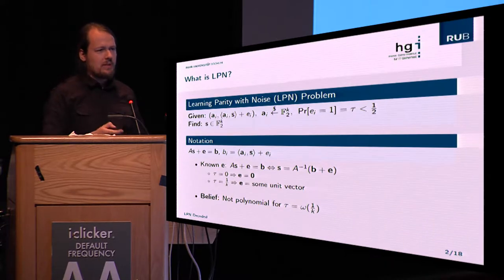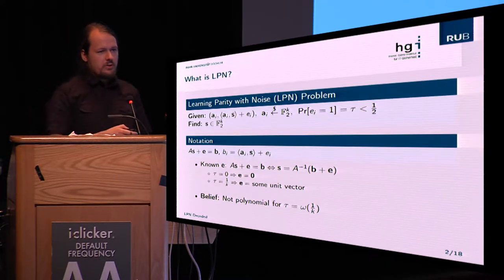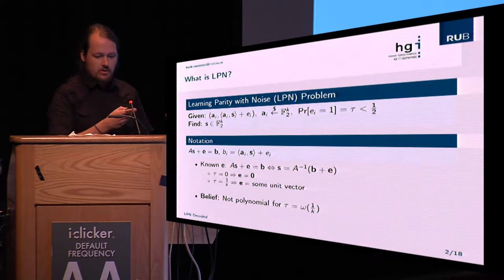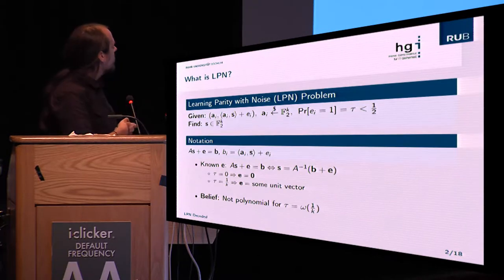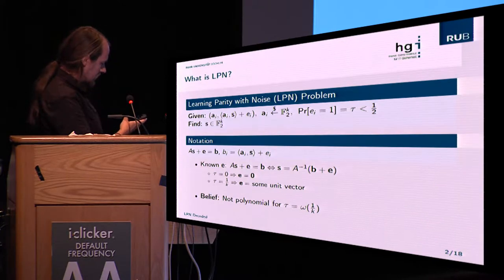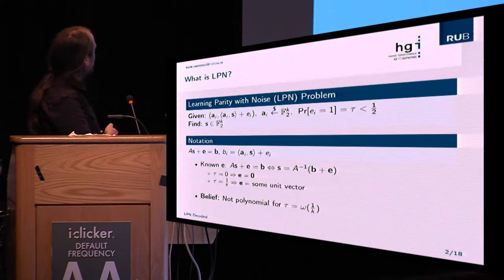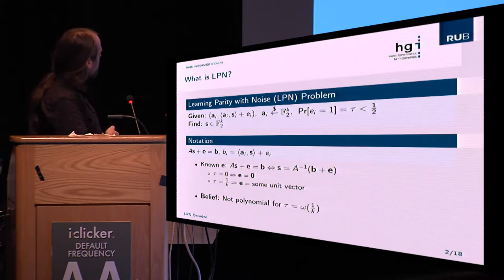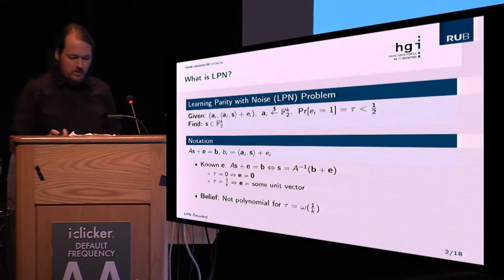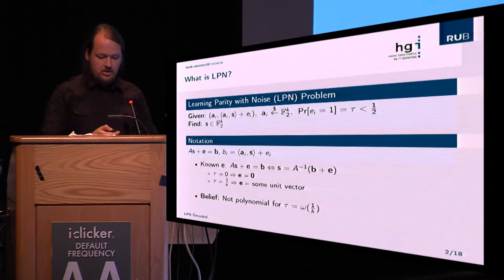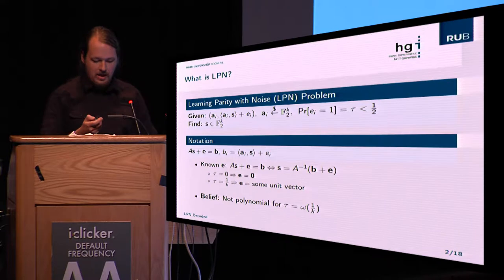You can draw as many samples as you want from this oracle. If you draw a fixed amount of samples, you can write all the a_i's in the columns of a matrix A. The small error bits e_i go into a vector e, and this is equivalent to solving the equation As + e = b for s, with known A and b.